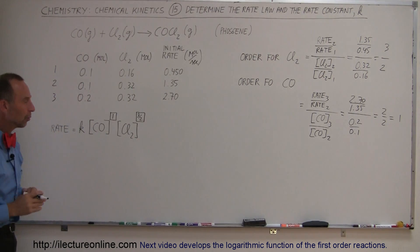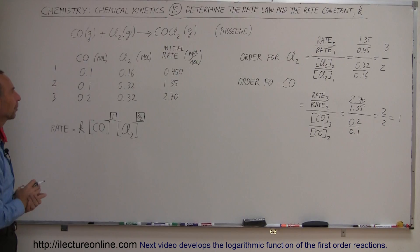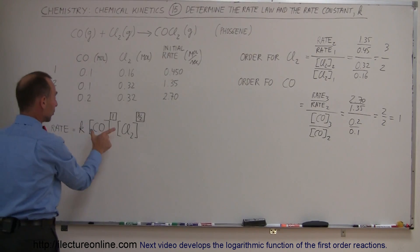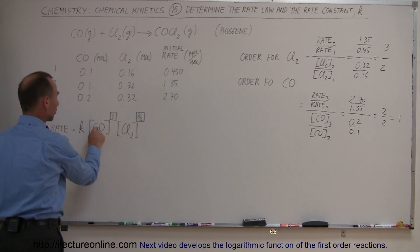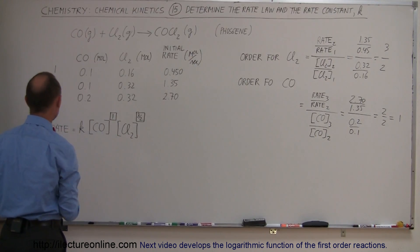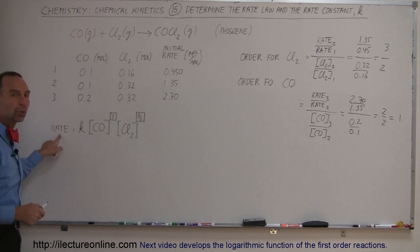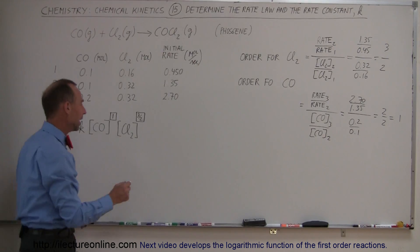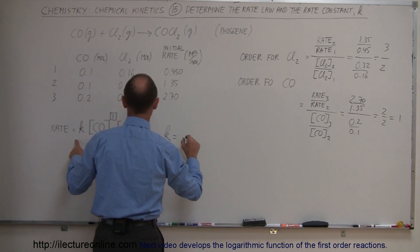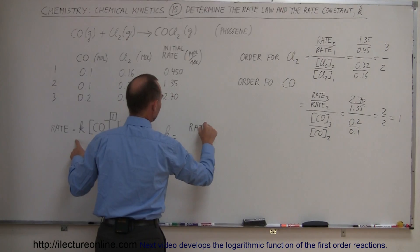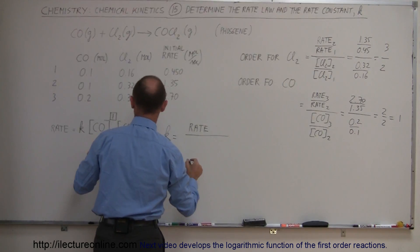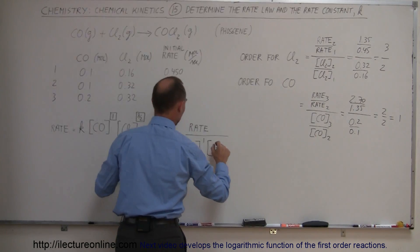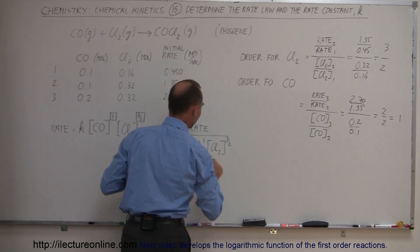There we have the rate law for this particular reaction. Now for determining the rate constant k: now that we have the orders, we'll plug in a specific concentration of carbon monoxide and a specific concentration for chlorine gas, along with the appropriate rate associated with those concentrations. That will allow us to find the value for k. So k equals the rate divided by the concentration of CO to the first power times the concentration of Cl₂ to the 3/2 power.